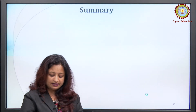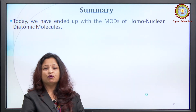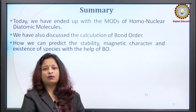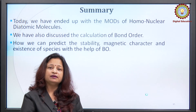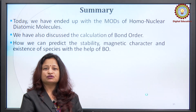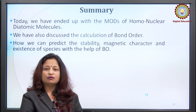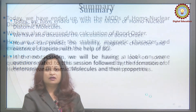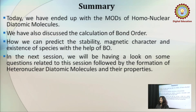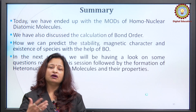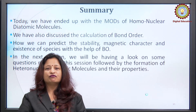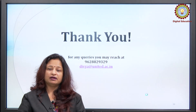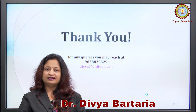In summary, today we covered molecular orbital diagrams of homonuclear diatomic molecules, calculated bond order, and used it to predict stability, bond length, bond dissociation energy, and magnetic character. In the next session we will look at questions related to this session, followed by molecular orbital diagrams for heteronuclear diatomic molecules and their properties. Thank you very much — see you in the next session.